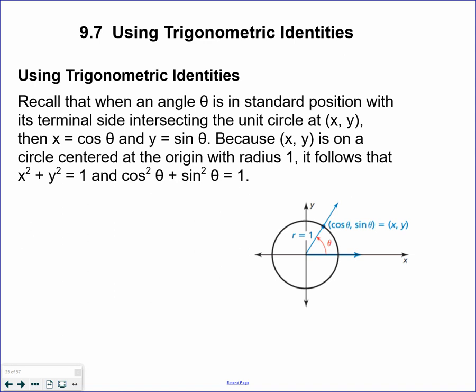Recall that when an angle measure in standard position has its terminal side intersecting the unit circle, cosine is x, sin is y. Since the radius of a unit circle is 1, by Pythagorean theorem, x squared plus y squared equals 1, which converts to cosine squared plus sine squared equals 1. This is referred to as a Pythagorean trig identity.